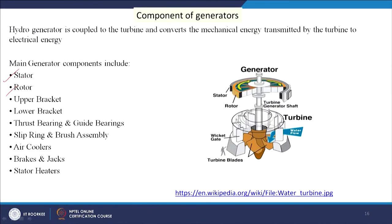The major components of the generator are: stator, rotor, upper bracket, lower bracket, thrust bearing, guide bearings, slip ring and brush assembly, air coolers, brakes, jacks, and stator heaters.